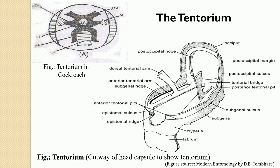The Tentorium is an endoskeleton of the head which is an internal cuticular framework, developed as a result of ingrowth and the fusion of some of the apodemal arms from the exoskeleton. In the exoskeleton, we have seen the anterior tentorial pits which are present on the clypeo-frontal suture, also referred to as the epistomal suture. From the inner side of these anterior tentorial pits, an ingrowth is developed which forms the part of the apodems, forming part of the endoskeleton of the head — the Tentorium.